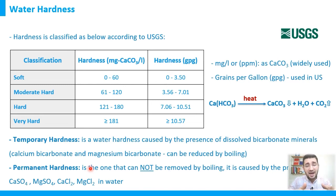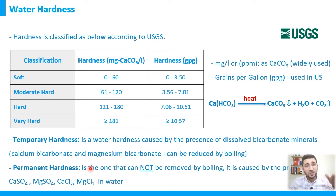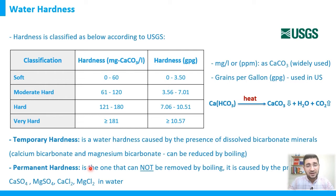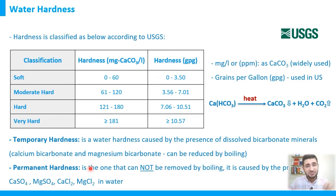Keep that classification in mind. Some countries may use different thresholds, but the concept is the same: high hardness means hard water, low hardness means soft water. When we say 'total hardness,' that includes both calcium hardness and magnesium hardness together. When we specify calcium or magnesium hardness, we refer to the contribution from that specific ion.